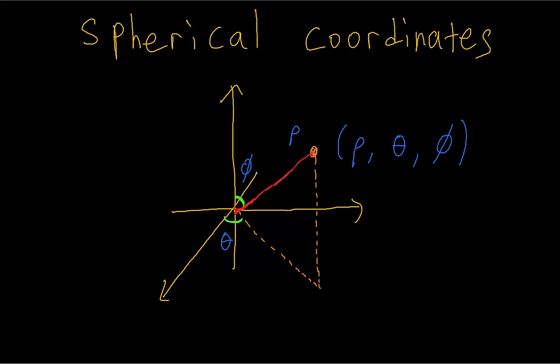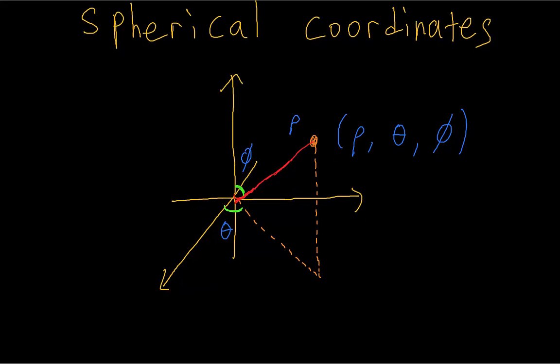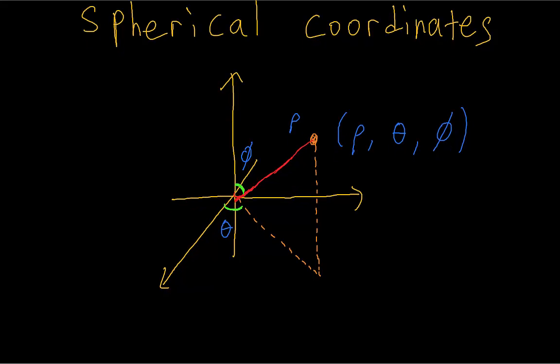Rho is the distance of the point from the origin. You can think of it as the length of the position vector of the point. Theta is the same thing as in cylindrical and polar coordinates. It's the angle from the positive x-axis.